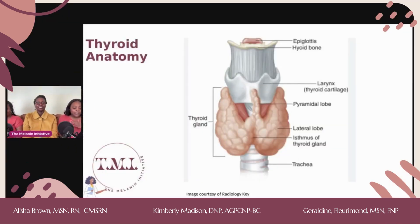So first we should start very basic and talk about where the thyroid is and what it does. The thyroid gland is located at the base of the neck. Its function is to produce hormones that regulate the body's metabolism, growth, and development. It plays a role in controlling your heart, digestive system, brain development, and bone maintenance. Its correct functioning also depends on a good supply of iodine in your diet.